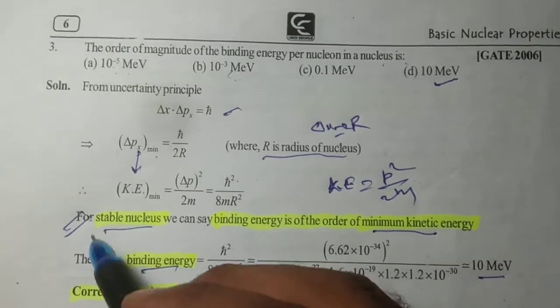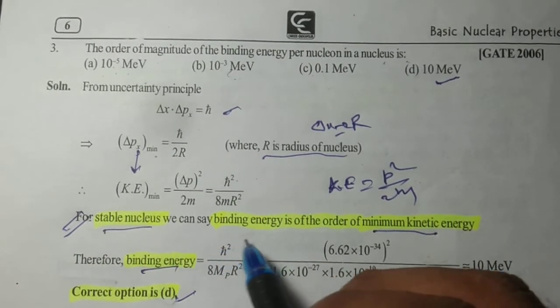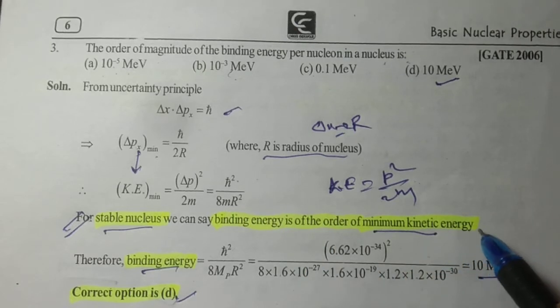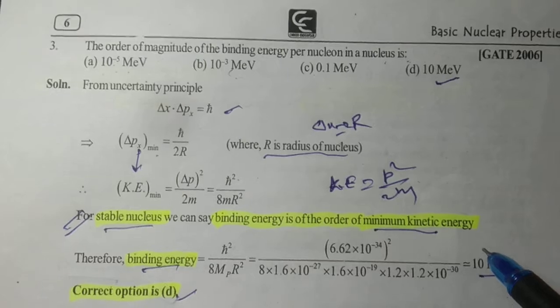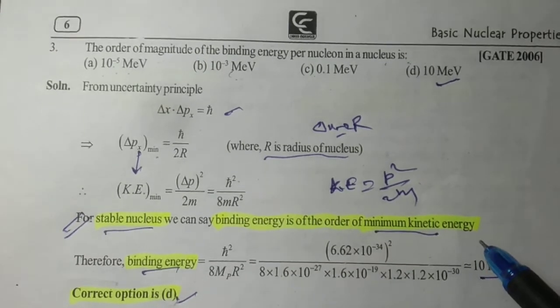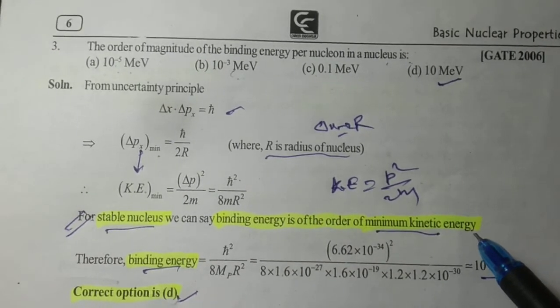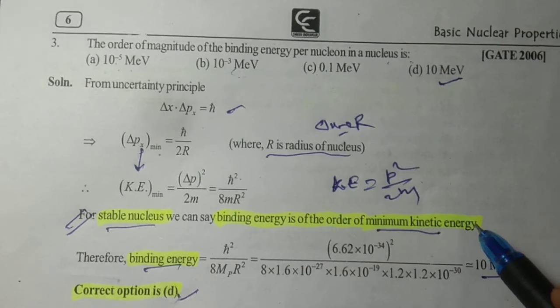This line is very important: for a stable nucleus, binding energy is of the order of minimum kinetic energy. So this is all about for today. I hope this is clear to all of you. Thanks for watching. Thank you.